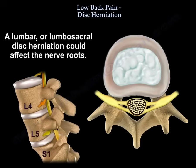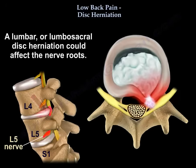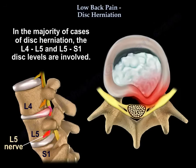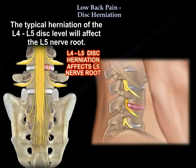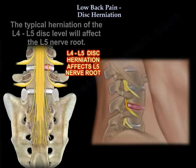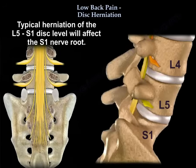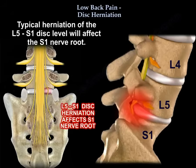A lumbar or lumbosacral disc herniation could affect the nerve roots. In the majority of cases of disc herniation, the L4-L5 and L5-S1 disc levels are involved. Typical herniation of the L4-L5 disc will affect the L5 nerve root. Typical herniation of the L5-S1 disc will affect the S1 nerve root.